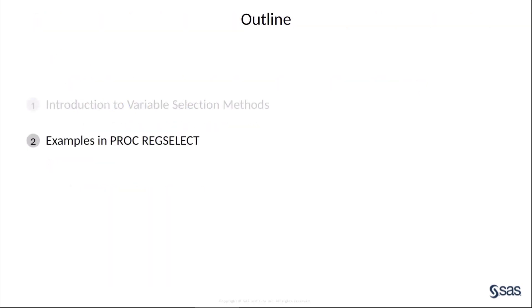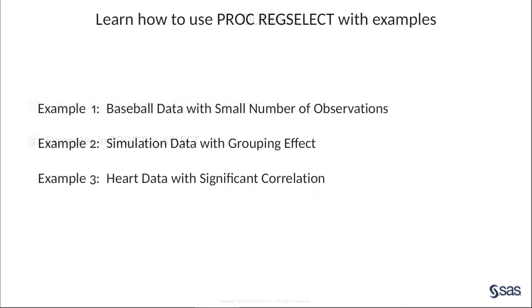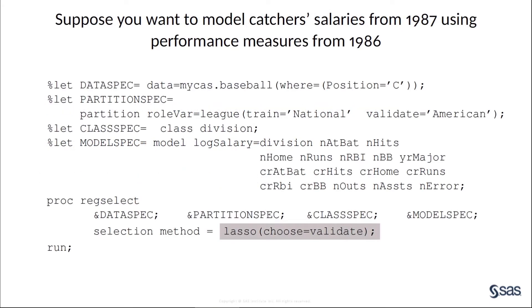Now let's look at three examples using the REGSELECT procedure. These three examples are related to the three limitations of the lasso that we just discussed. The first example involves the case where the number of observations is less than the number of variables. The dataset in the first example contains performance information for major league baseball players in the 1986 season and salary information in the 1987 season. We are interested in modeling the player's salaries from 1987 using the performance measures from the previous season.